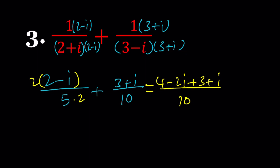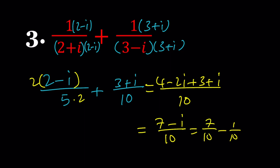Now make a common denominator by multiplying by 2. You get 4 minus 2i plus 3 plus i divided by 10. Then 4 plus 3 equals 7 minus i divided by 10. This can also be written as 7 over 10 minus 1 over 10 times i in standard a plus bi format.